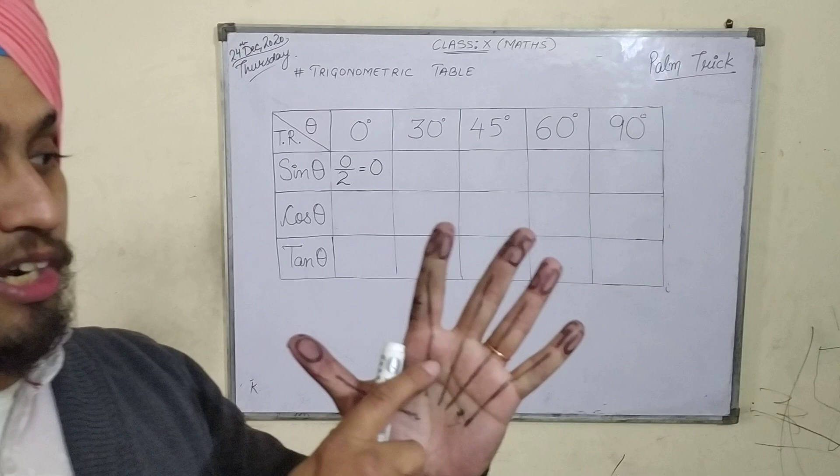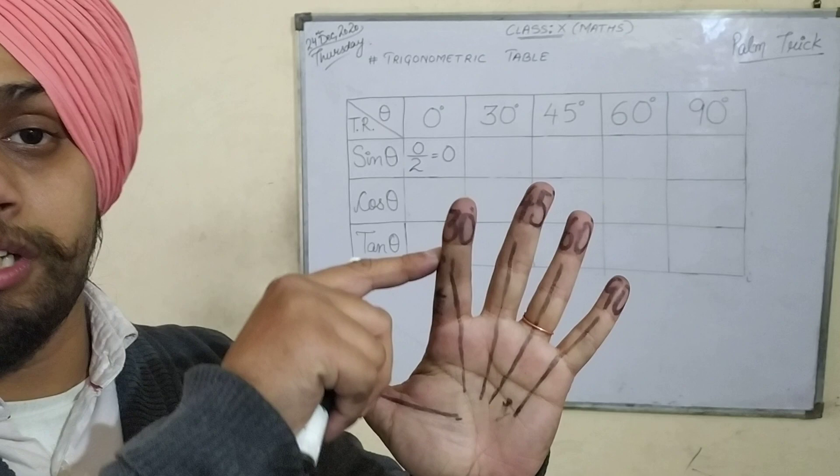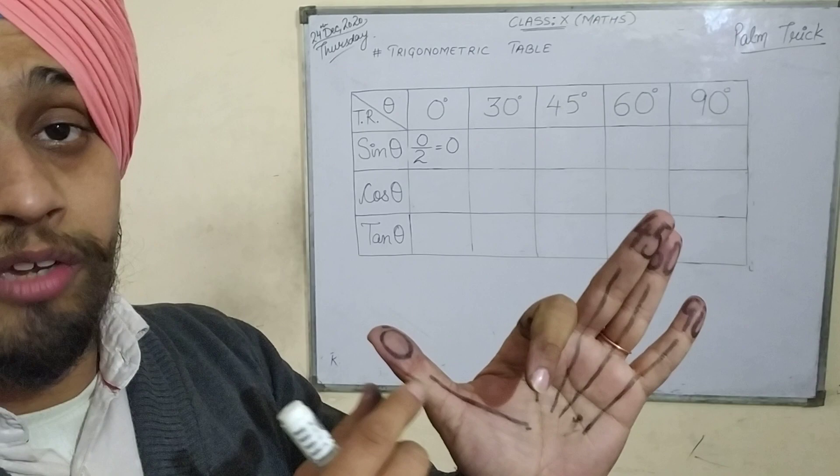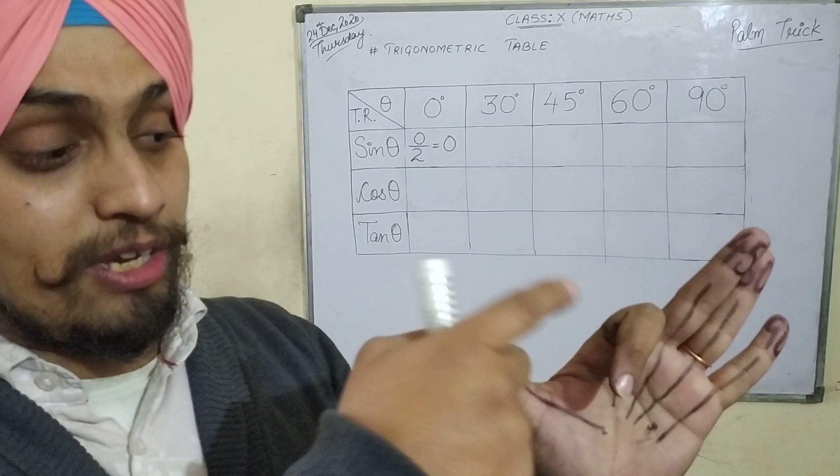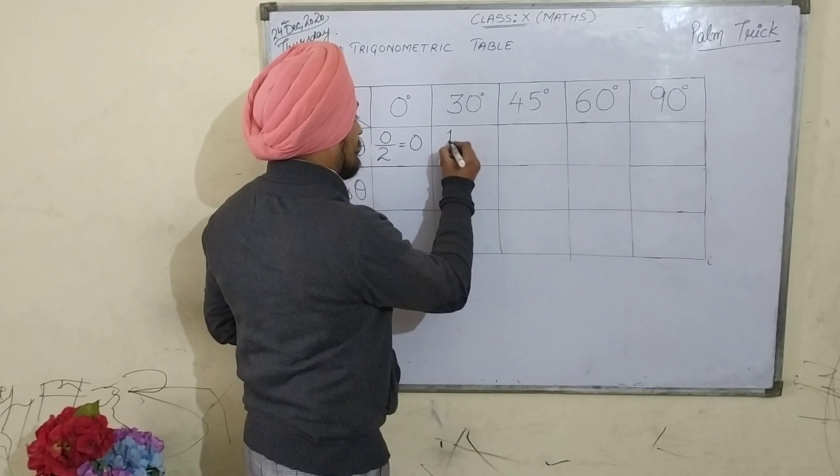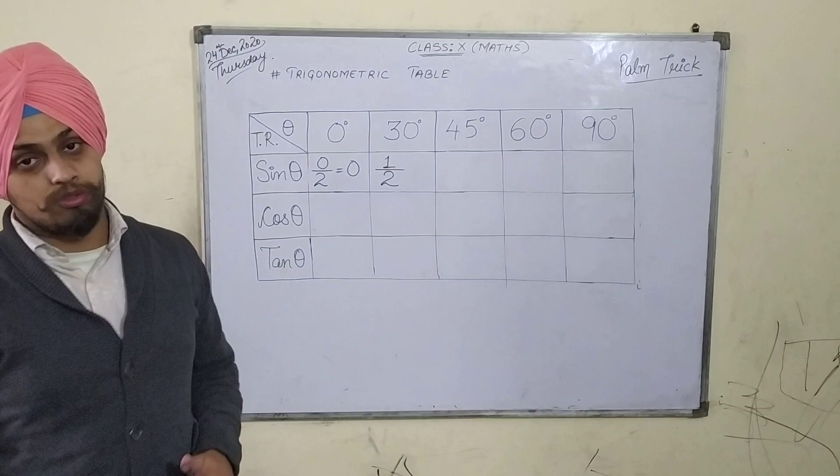Let's follow the same method for sin 30 degree. Here on this finger 30 degree is written. I will bend this finger and now see how many fingers are to the left of it — only one finger. I will take the square root of that number of fingers. Square root of 1 is 1. And then again I will divide it by 2. So the value of sin 30 degree is 1 by 2.